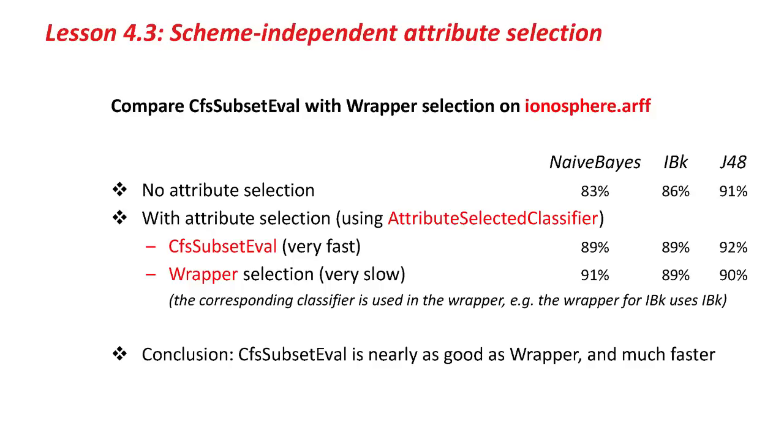When I did IBK, I got 86% for plain IBK, 89% for CFSSubsetEval, and the wrapper I wrapped IBK. In each of these things, I wrapped the corresponding classifier, the one that we're using for classification. I got 89%, so the two Attribute Selection methods were the same.